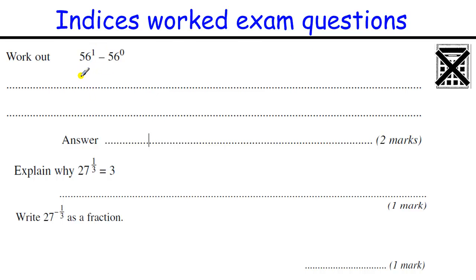56 to the power of 1 is just 56 — anything to the power of 1 is itself. 56 to the power of 0 is just 1 — everything to the power of 0 is 1. So that's two rules we need to know.